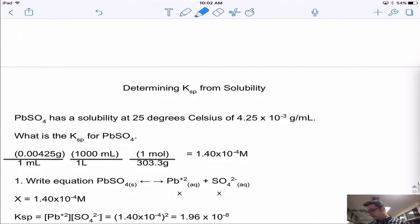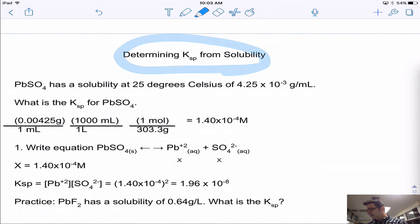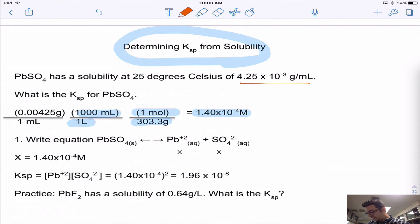So how do I do a problem with this? Well, here's a problem where I want you to determine KSP from the solubility. For example, continuing with PbSO4, we have our salt that has this solubility in grams per milliliter. The first thing I need to do is change it into concentration, molarity. So I take the grams, and instead of grams per milliliter, I make it grams per liter. I times it by a thousand milliliters for every one liter, and I then change it to moles per liter. I times it by one mole over the gram formula mass, and I get moles per liter or the molarity.